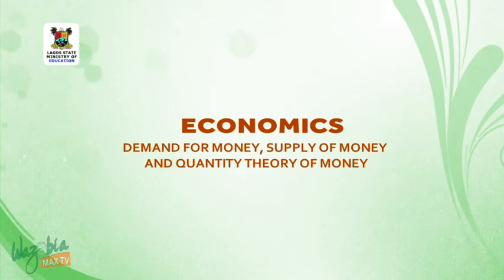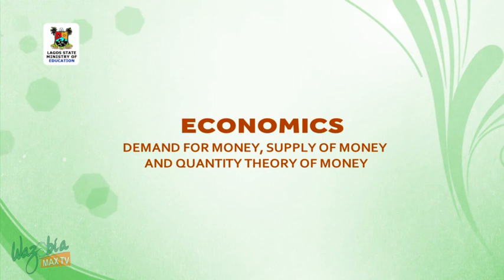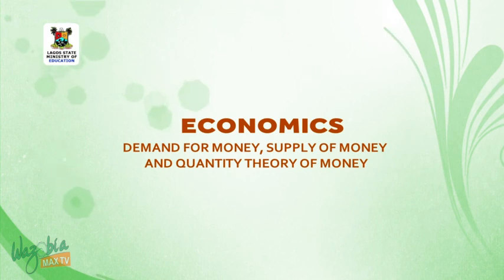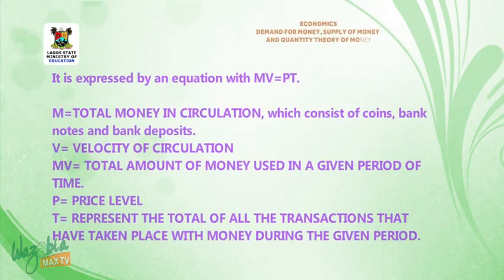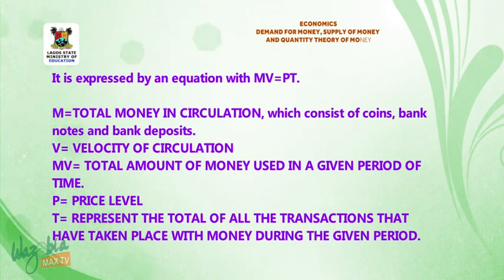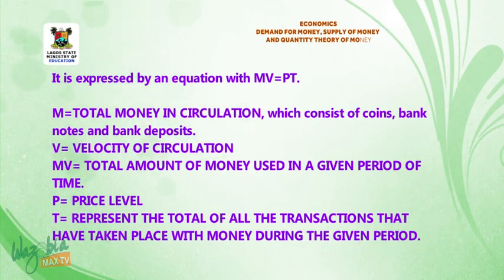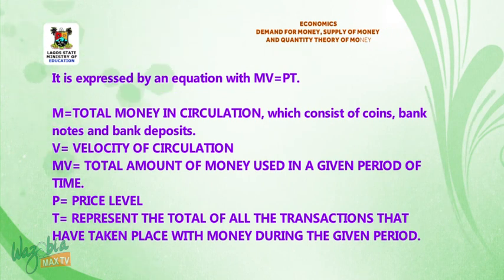Welcome back from that short break. We shall continue our discussion on quantity theory of money. The theory is expressed by the equation MV = PT. M is the total money in circulation, which consists of coins, bank notes, and bank deposits.